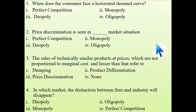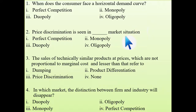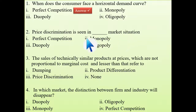First question: when does the consumer face a horizontal demand curve? A horizontal demand curve means it is a perfectly elastic demand curve, where demand equals average revenue equals marginal revenue equals price. This only occurs in the case of a perfect competitive market.